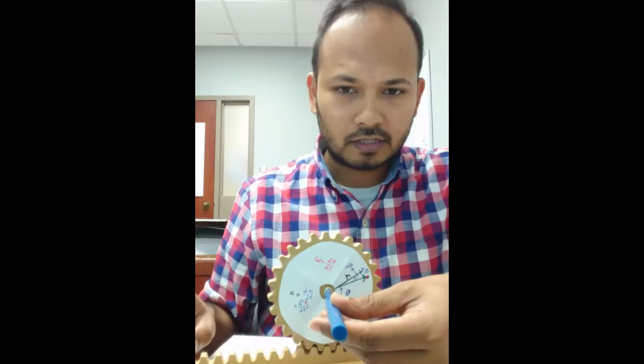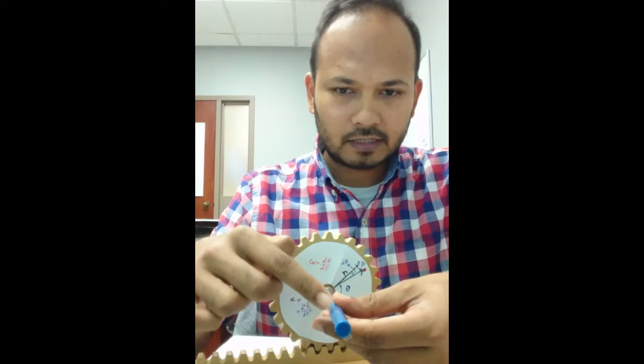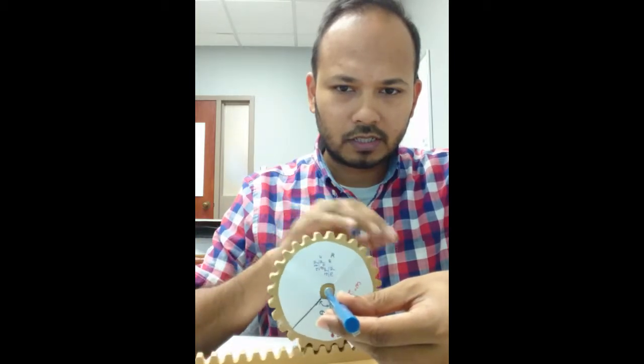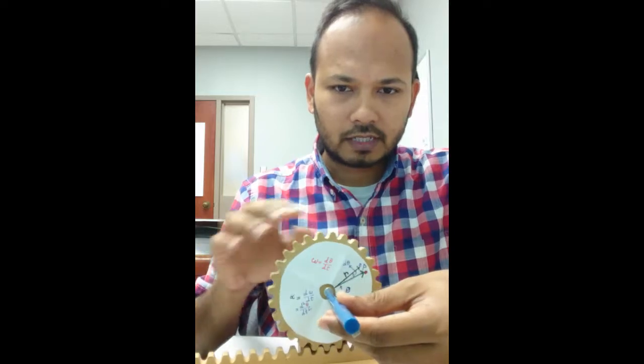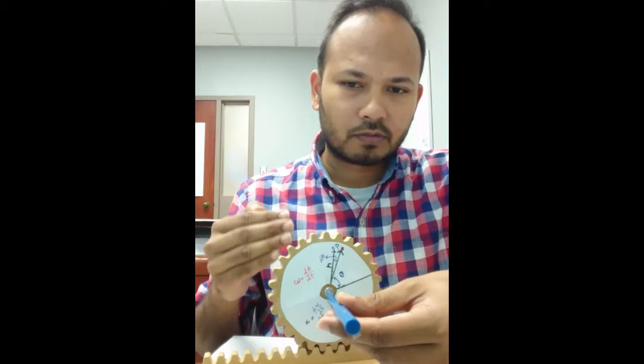So it doesn't have any translation. The axis is fixed, the axis is not moving. Any point P on the gear is circulating around the axis. It has a circular path, so it is a pure rotation.